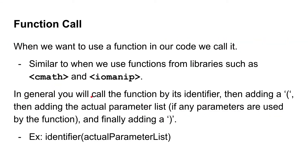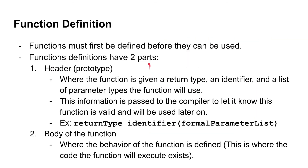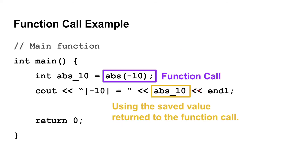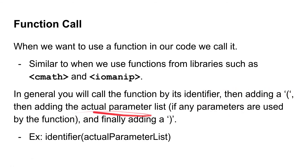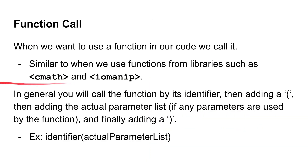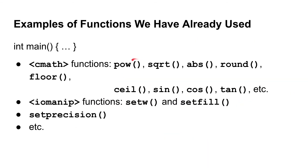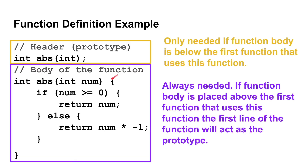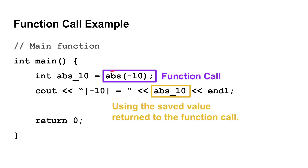In general, when you want to call a function, you call it by its identifier followed by open parentheses and then a parameter list. If the parameter list is empty, it will look like just a pair of empty parentheses. But if the parameter list is not empty, like in our ABS example, then your function call will look like that, where we are passing a parameter to the function.